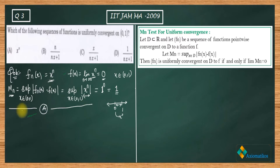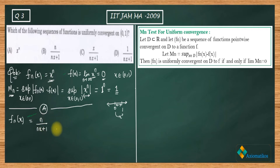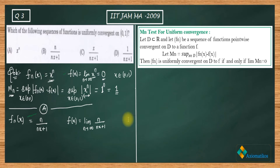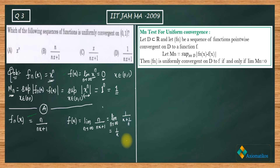Now let us talk about Option B. For Option B, f_n(x) = n/(nx+1). Let me check whether this is uniformly convergent. First, let us determine the pointwise limit f(x) = limit as n goes to infinity of n/(nx+1). Dividing numerator and denominator by n gives 1/(x + 1/n), and as n → ∞, this converges to 1/x. So this sequence of functions converges pointwise to 1/x on (0,1).